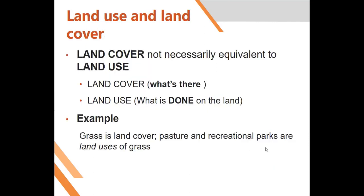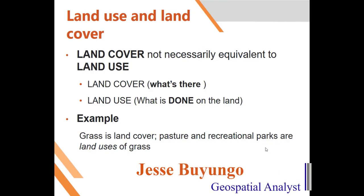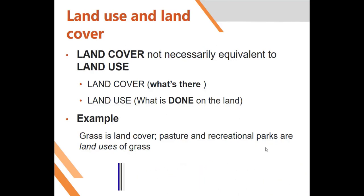Many people confuse land cover with land use. Land cover refers to what is physically on the ground — for example, grass or trees. Land use refers to what is done on that land. For example, the land cover is grass but it may be used as pasture or for recreation. If the land cover is built-up, the land use could be residential or commercial.